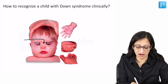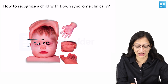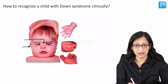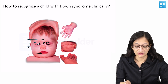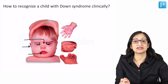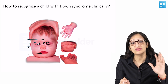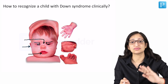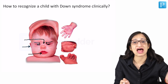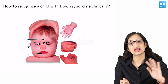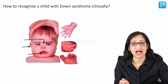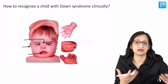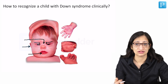Apart from that, there are low set and dysplastic ears, there can be a protruding tongue, and they have a short neck. If you look at these individuals from behind, they can have something known as flat occiput — their occiput is really flat — and that also helps in identifying this condition.